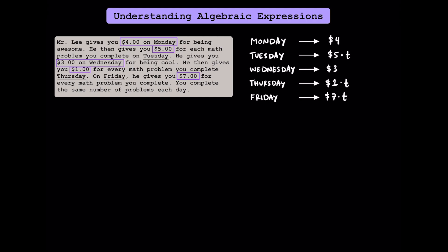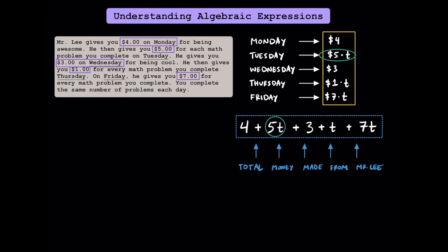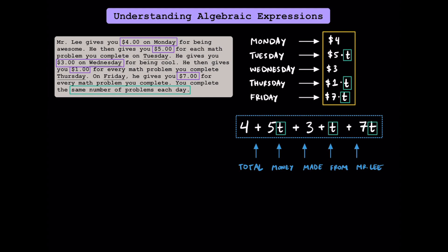To represent the total amount of money you could make in a week, we can add up all these bits of information to create one total algebraic expression. Simplifying 5 times t to 5t, 1t to just t, and 7 times t to 7t, we can write an algebraic expression that represents the total amount of money you can make in a week. Since we know that you completed the same number of problems each day, we use the same variable of t.